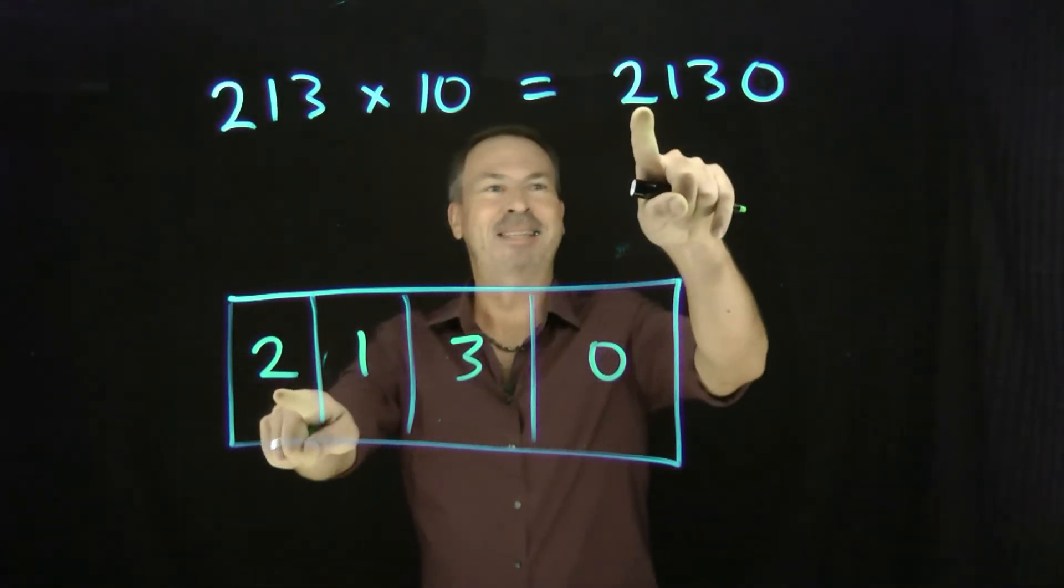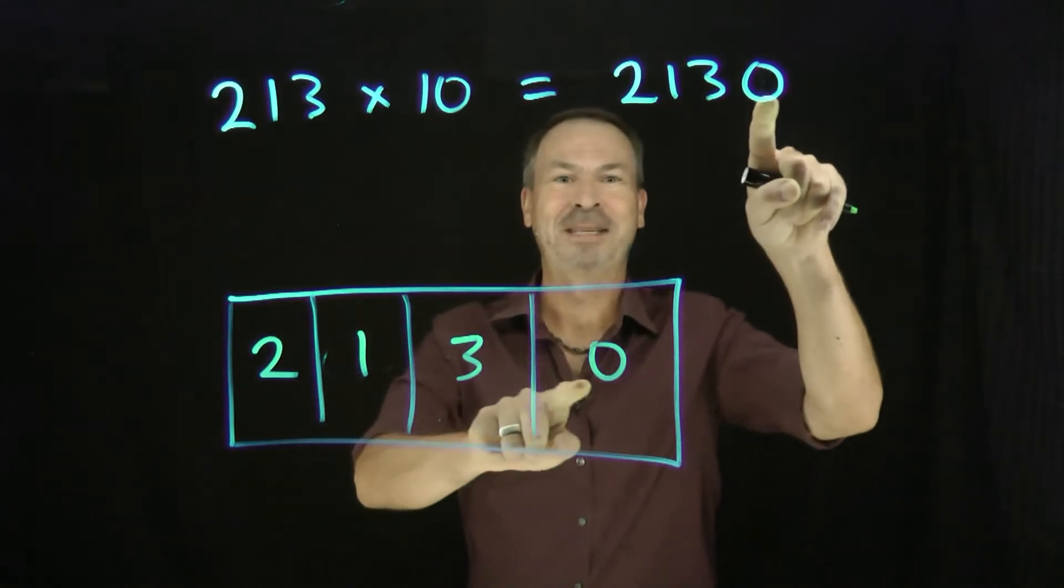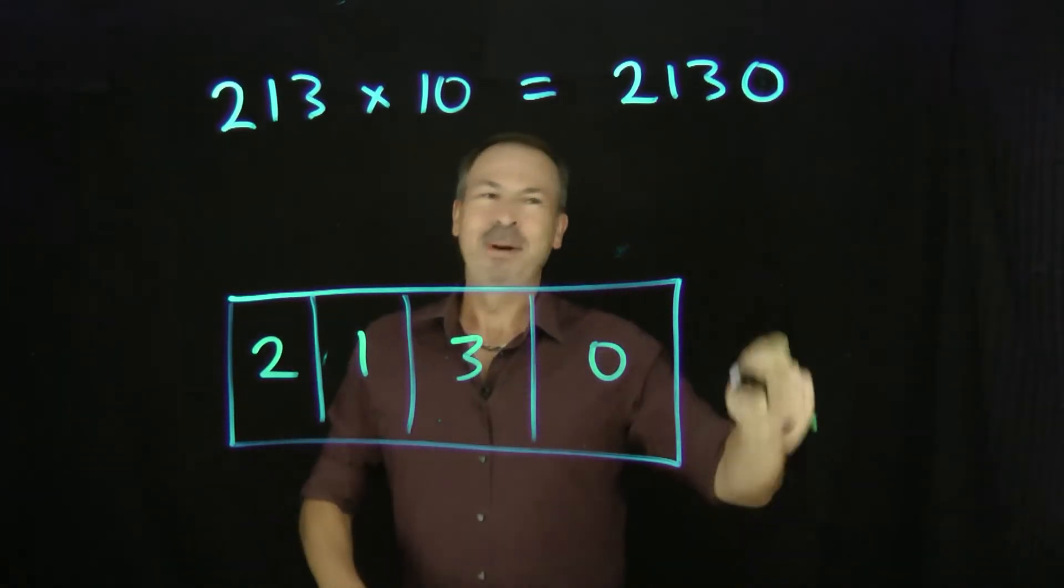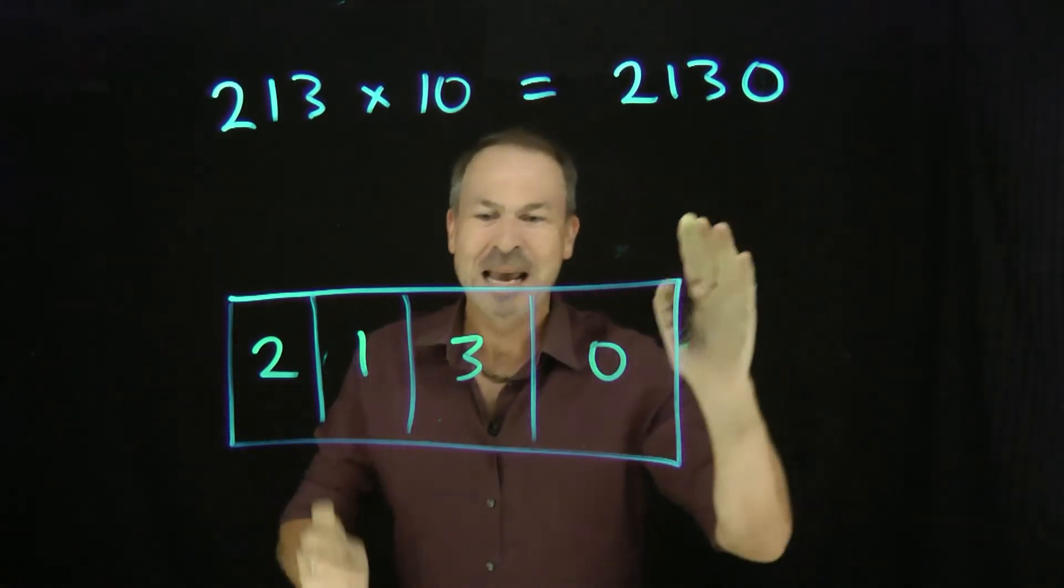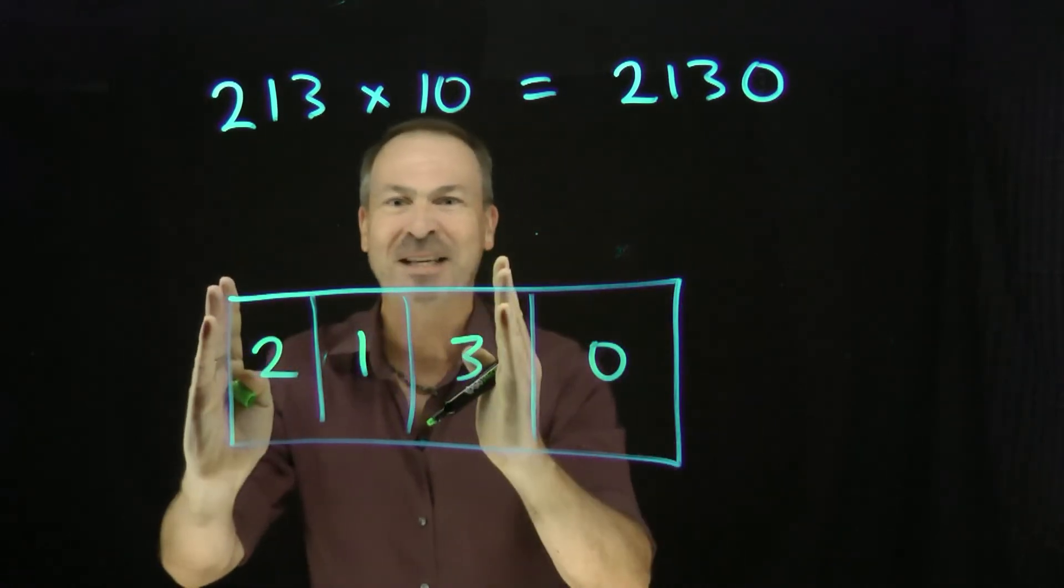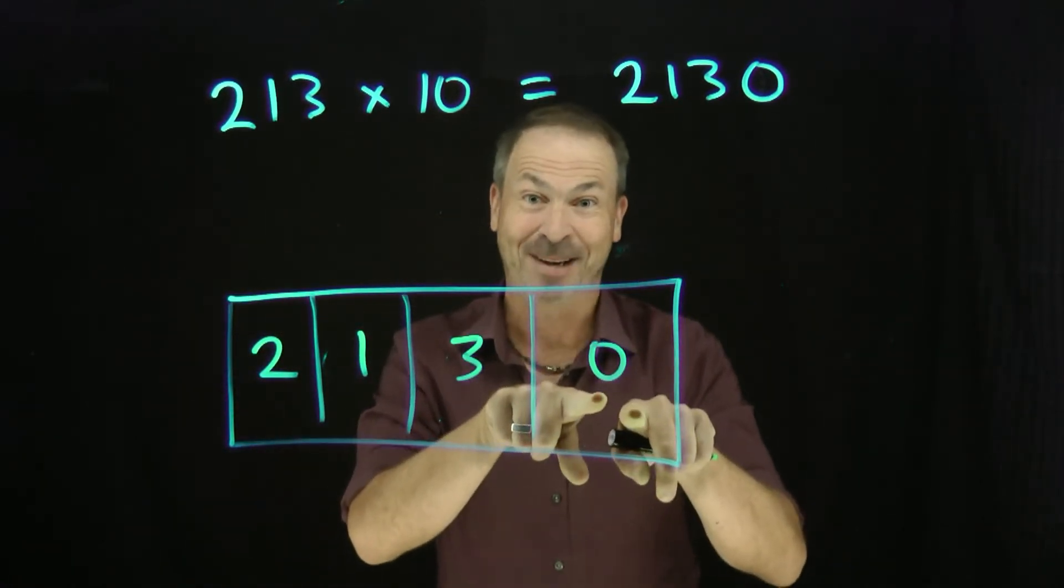So there's the answer and it does match 2, 1, 3, 0. Okay, but we didn't really tack a zero in the end. What really happens, all the explosions shifted things over and revealed a zero at the very end.